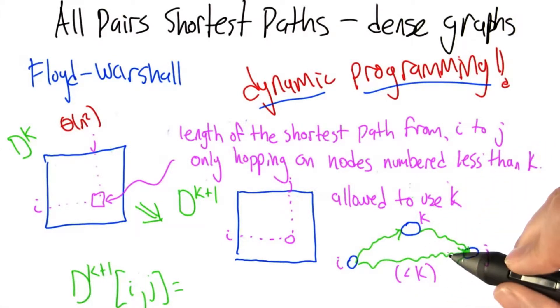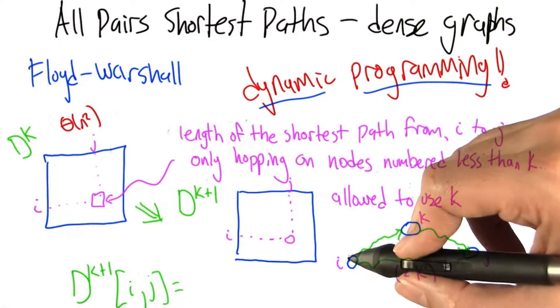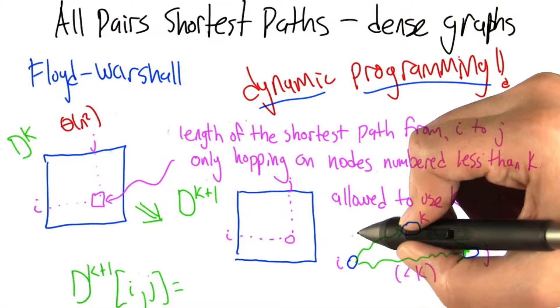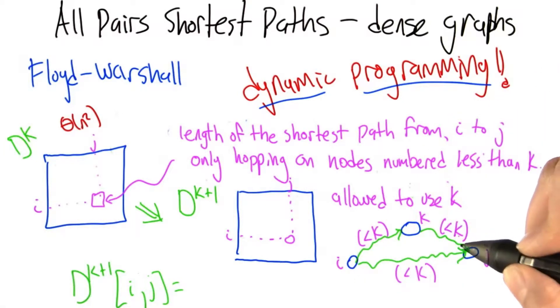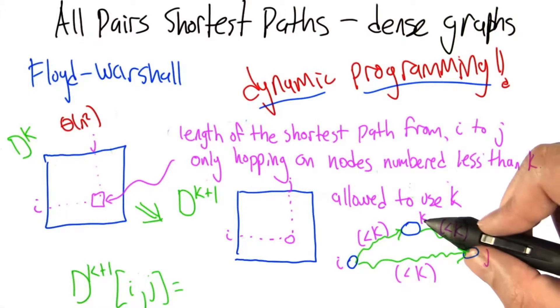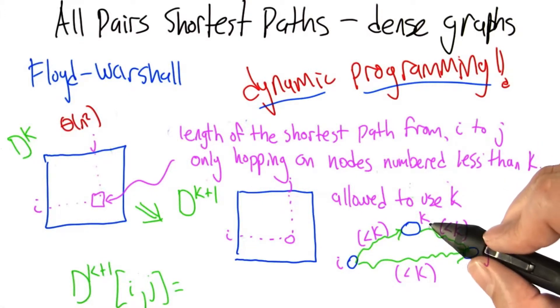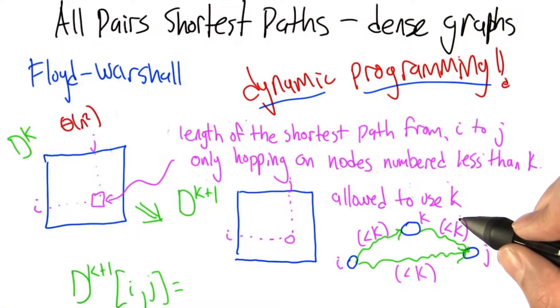But in visiting k, we don't ever need to visit k on the way to k. That wouldn't be a very good path. The shortest path from i to k only using nodes less than k, then we follow another path from k to j only using nodes whose numbers are less than k. Those are the only things that can happen. We don't want to visit k twice, and we're not allowed to use any nodes greater than k.